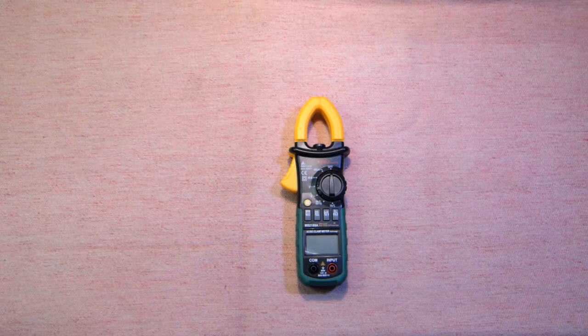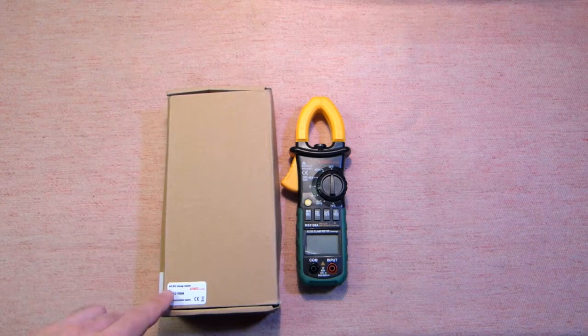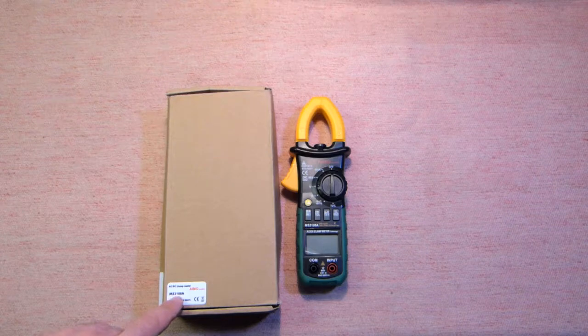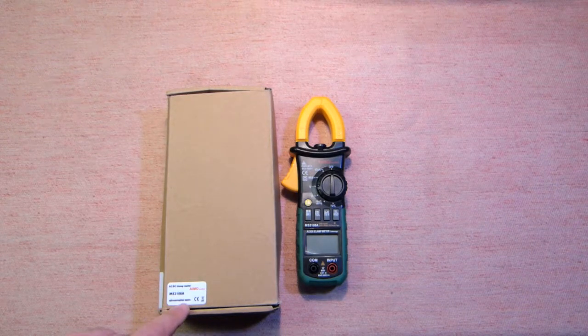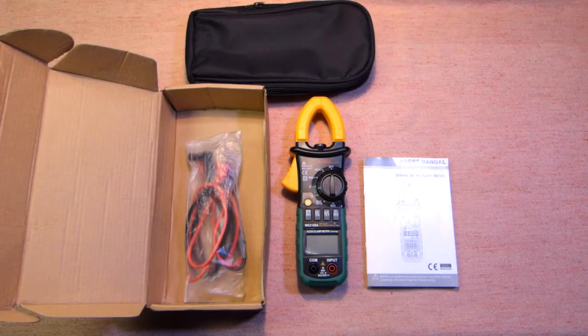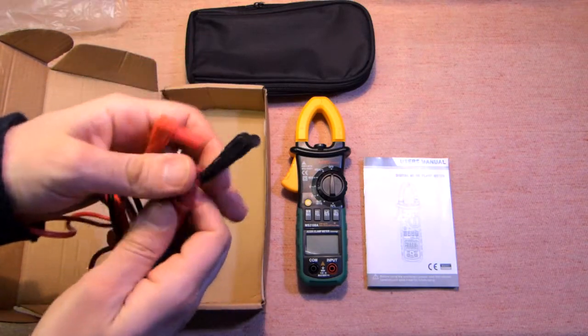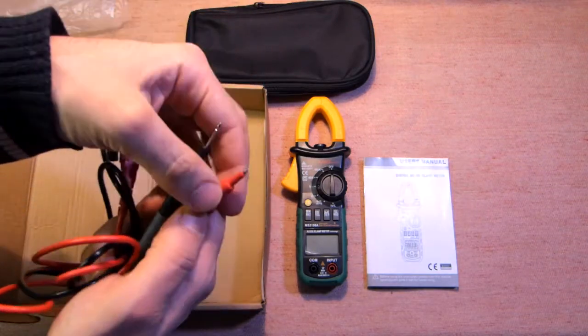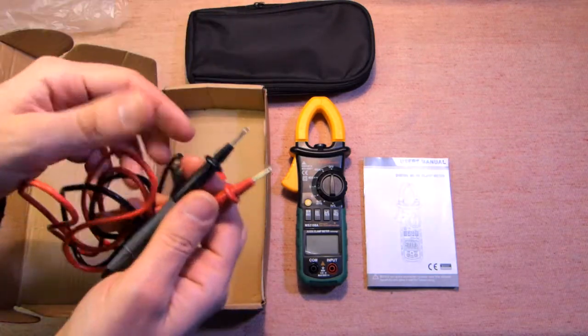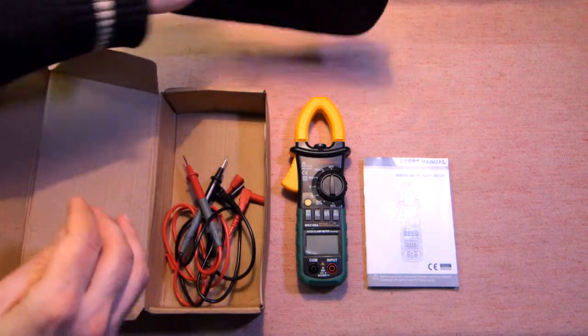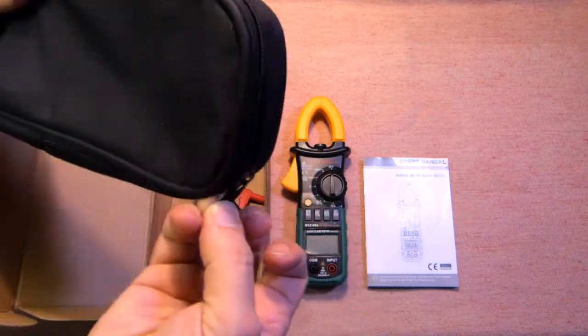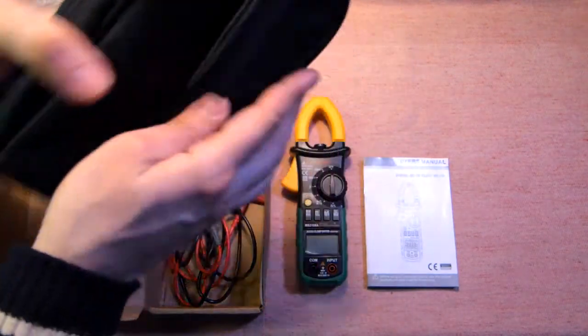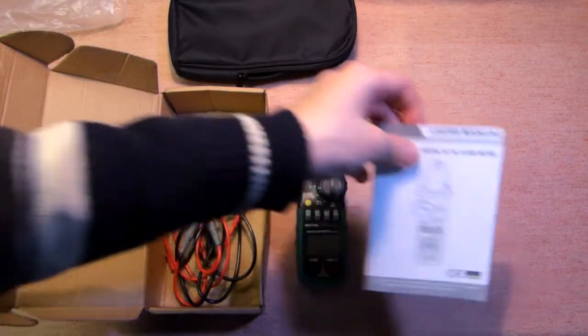The device comes in a cardboard box. AC-DC clamp meter, ammeter MS-2108A. Together with the device we get probes, also very useful things, the bag, and the manual in English.